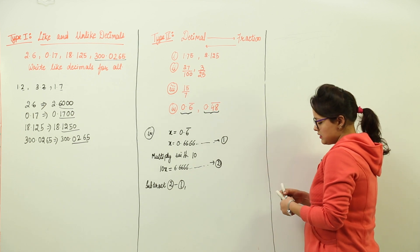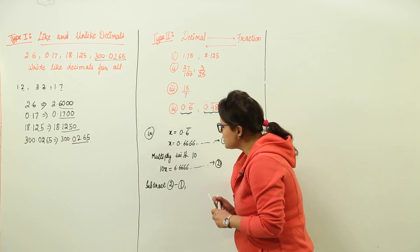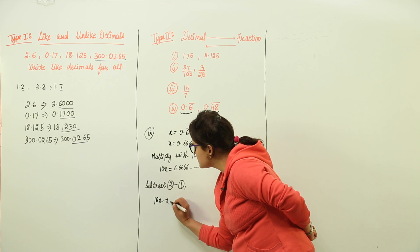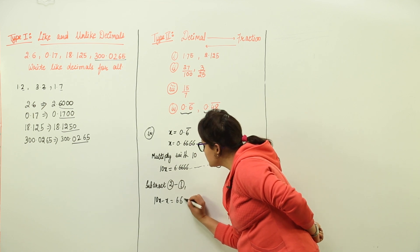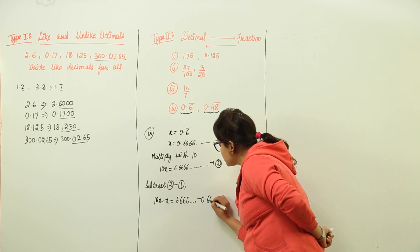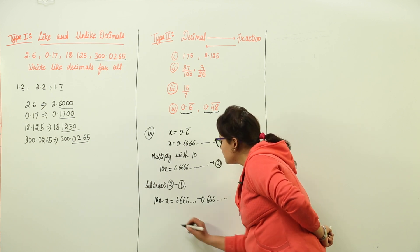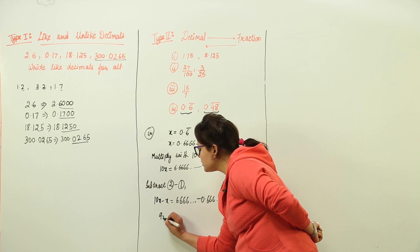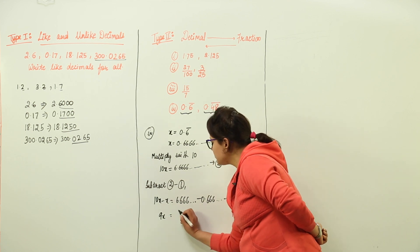On subtraction, you would see that you get 10x minus x equal to 6.6666 and so on minus 0.6666 and so on. And we get 9x on the left hand side, on the right hand side we get 6.